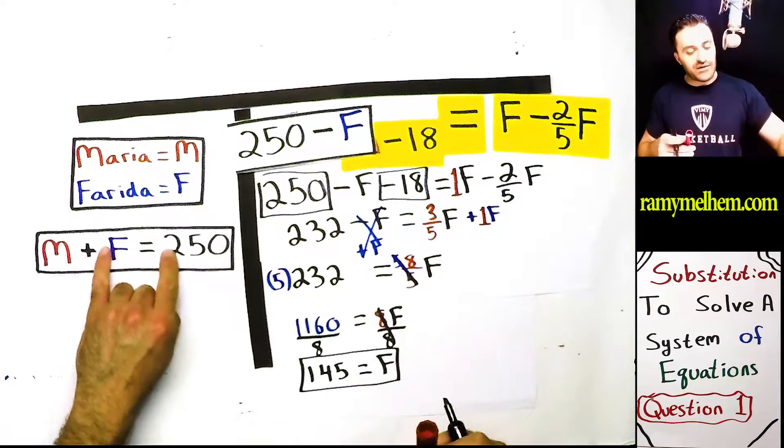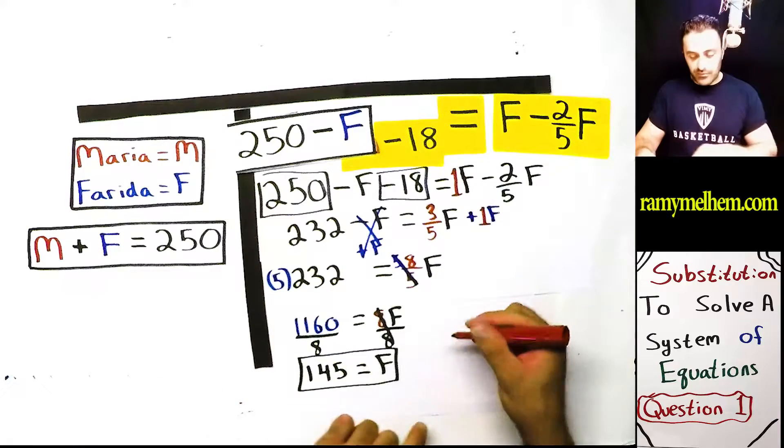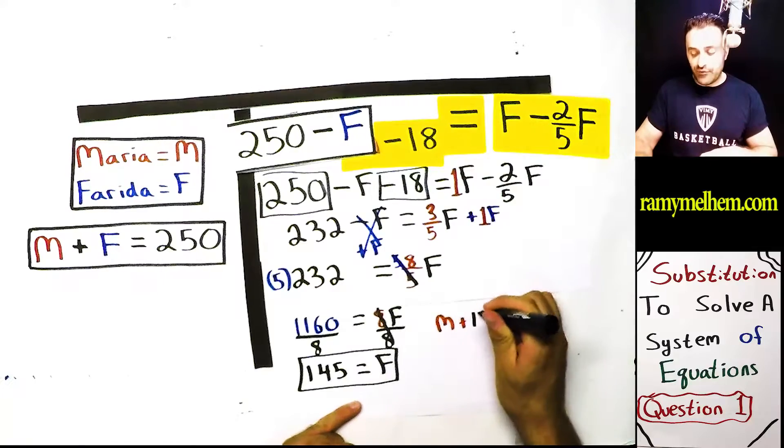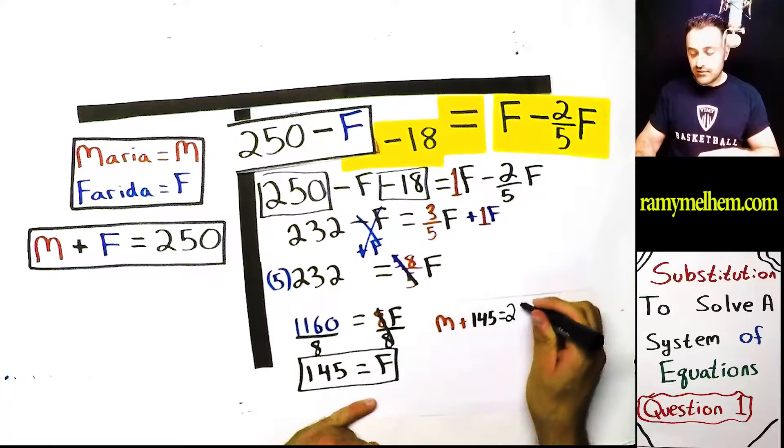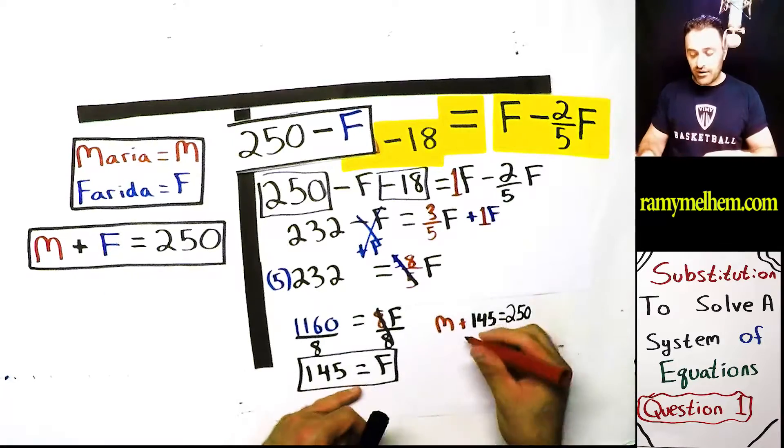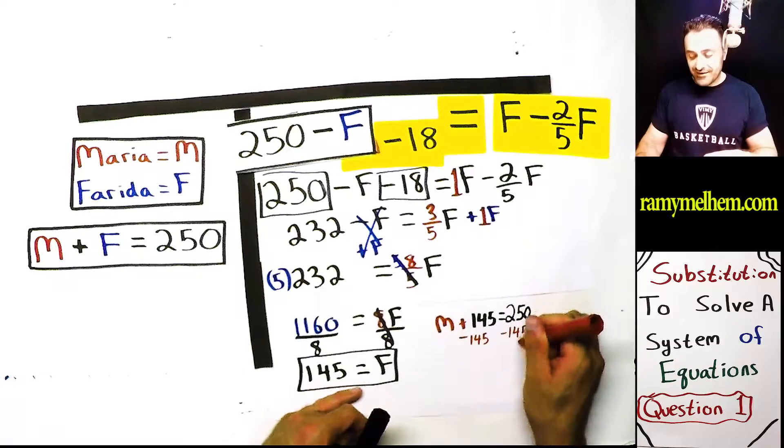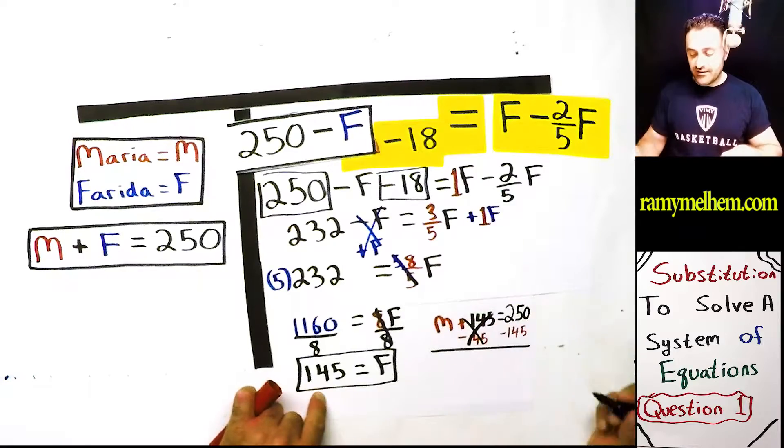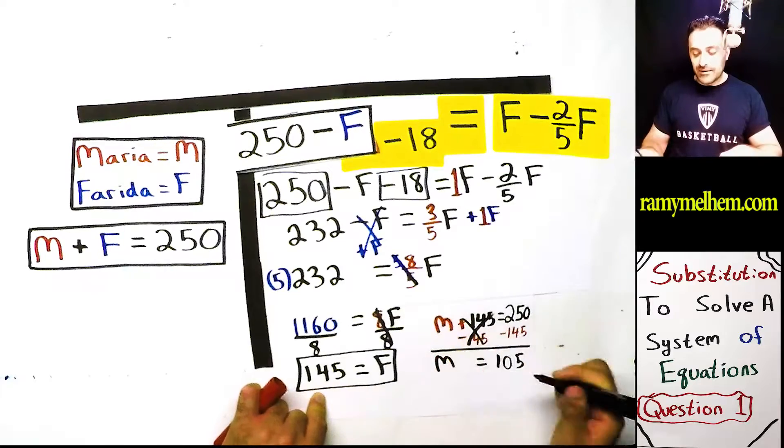Maria plus instead of F, I'm going to write 145 equals 250. Okay, could I not figure out what M is now? This is the easy part. Go 145 minus 145 here. Go minus 145 there. It's beautiful when you get this stuff, guys. Oh, look, these are gone. So I get 105 equals Maria. Maria has 105 and Farida has 145.